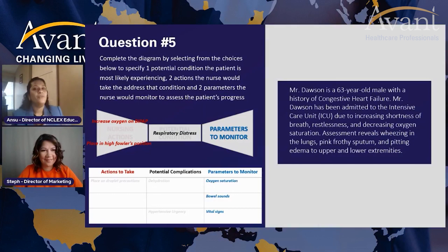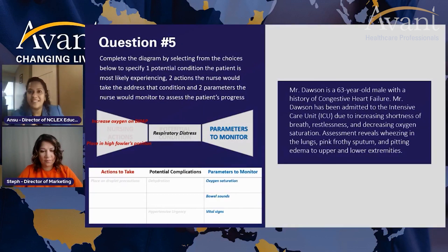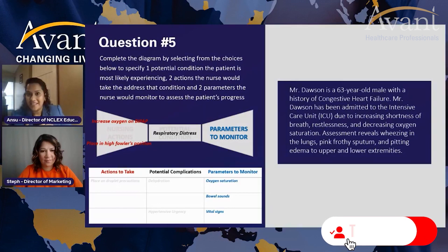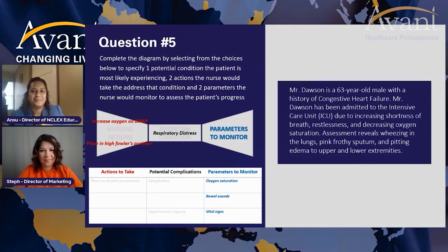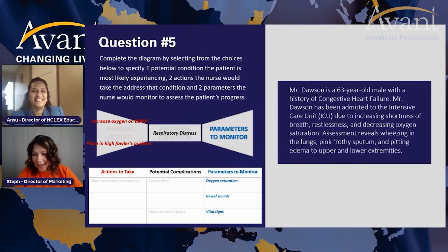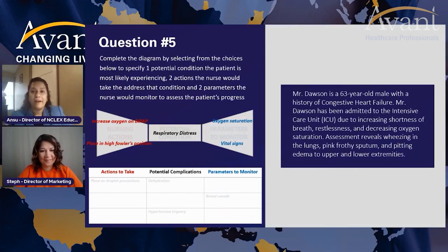The question isn't done yet — we still have to choose what parameters to monitor for the rest of the shift. We have three options: monitor oxygen saturation, monitor bowel sounds, and monitor vital signs. The two correct answers are oxygen saturation and vital signs. While bowel sound assessment is part of your nursing assessment, it is not critical for this patient and this scenario. Excellent job.